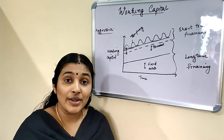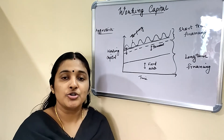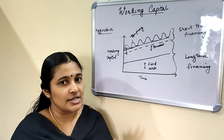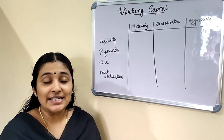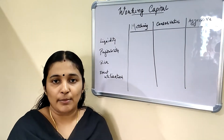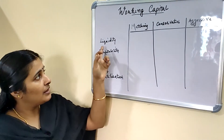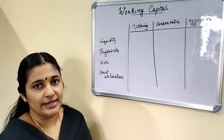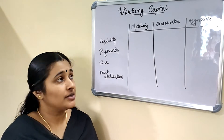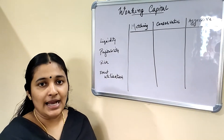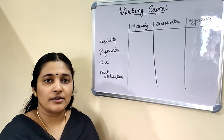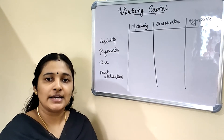These are the three approaches: matching approach or hedging approach, conservative approach, and aggressive approach. Now we have to see the major differences between the three approaches of working capital financing. In terms of liquidity, the matching approach is a balanced approach, as short-term financing is for temporary assets and long-term financing is for permanent assets.